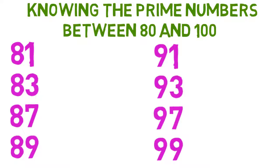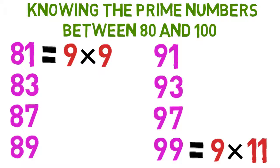You probably recognize two of these numbers, 81 and 99, from the multiplication table. 81 equals 9 times 9, and 99 equals 9 times 11, so neither is a prime number.